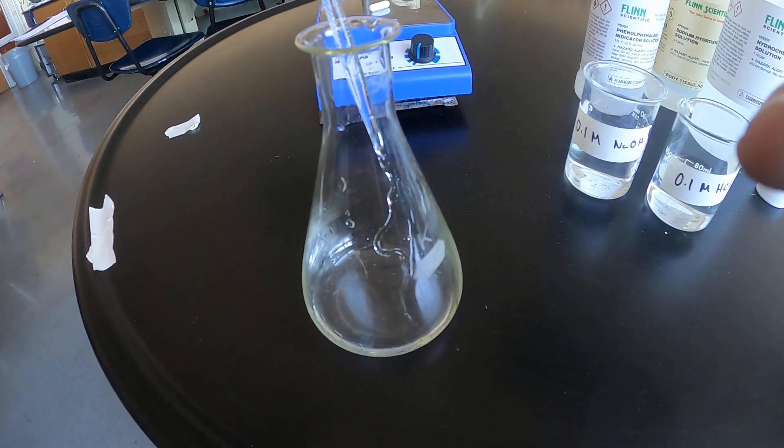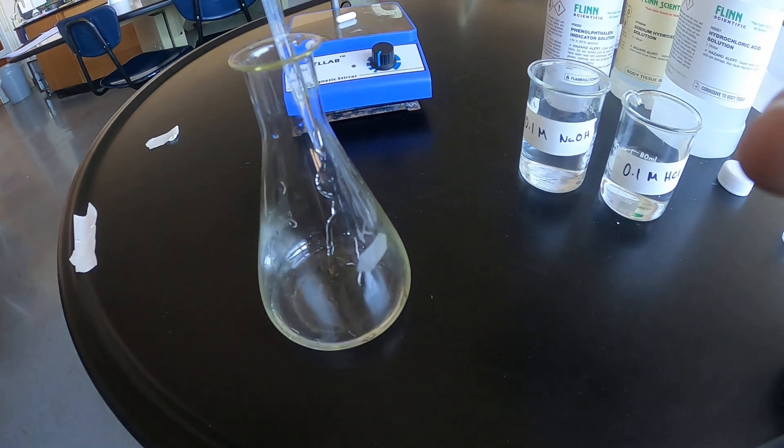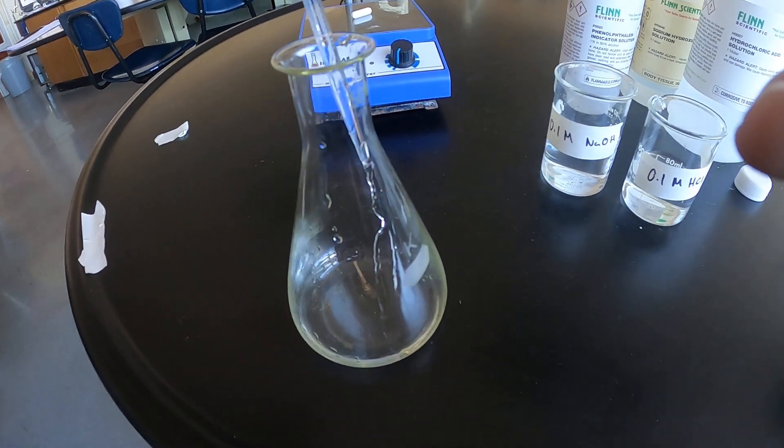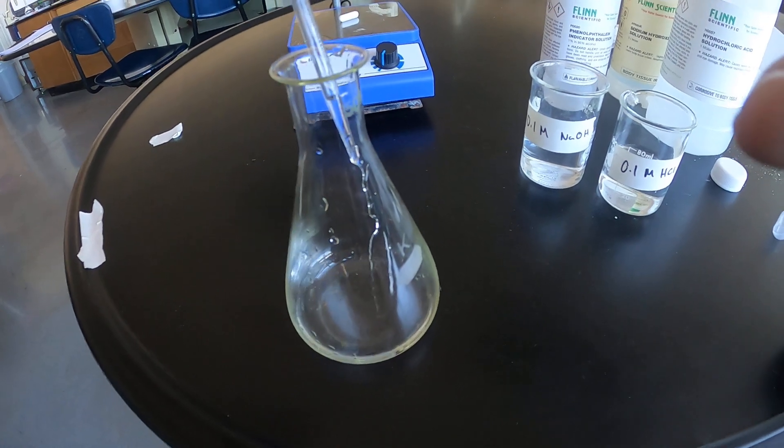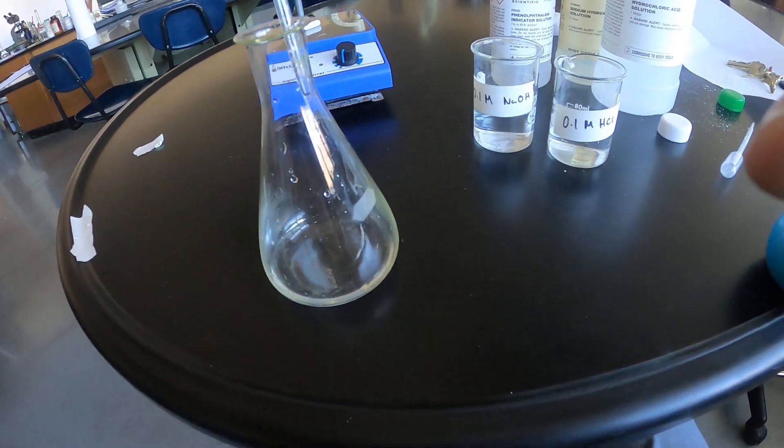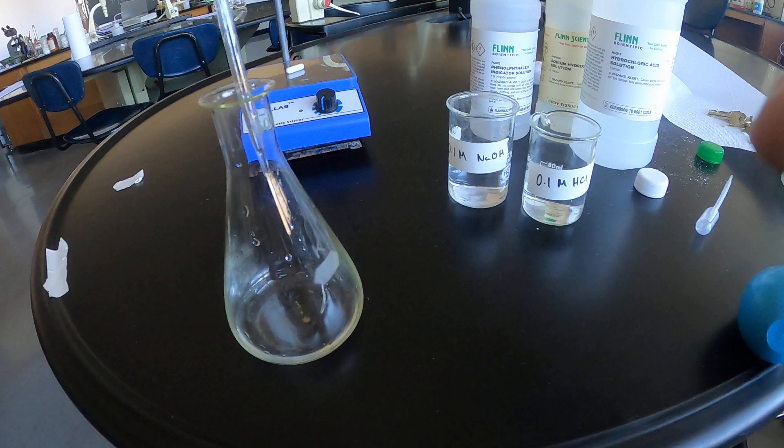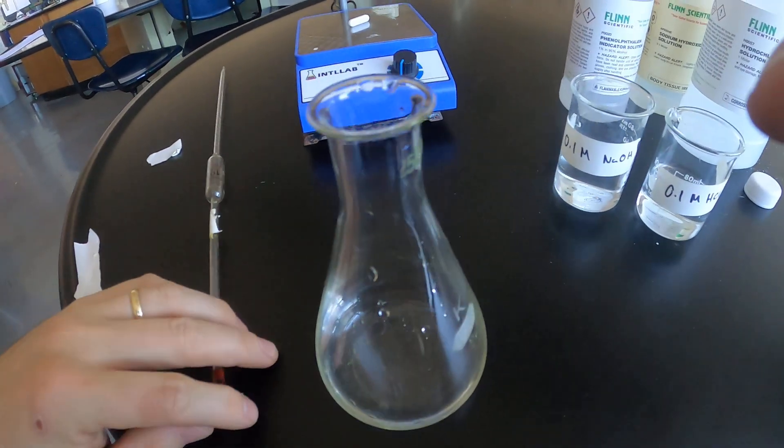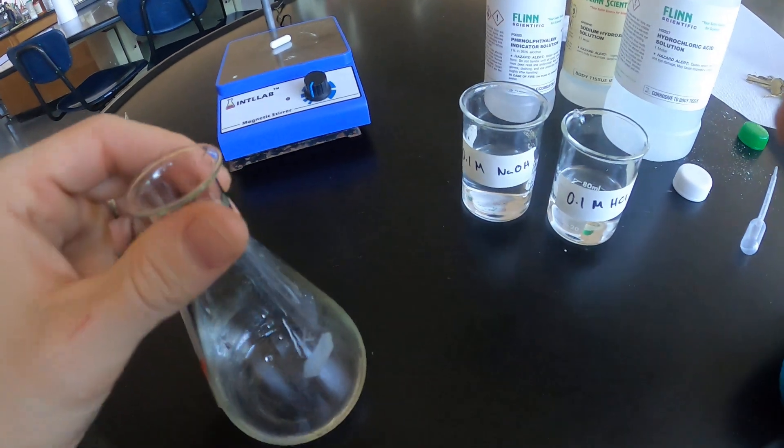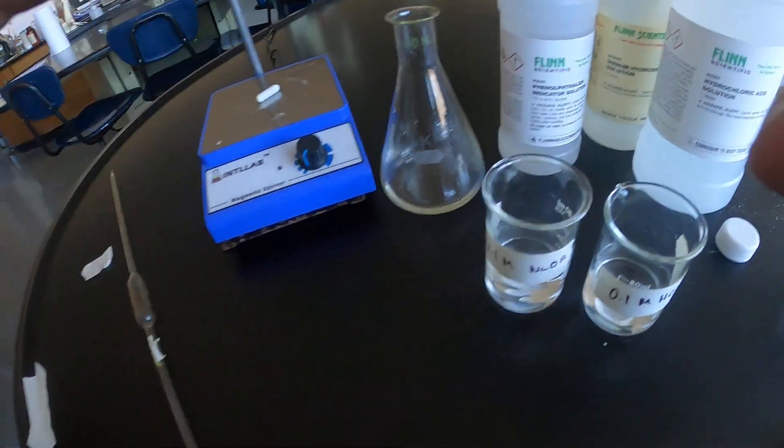In this lab you might share materials with the neighboring group. Could be the stir plate, could be the volumetric pipette, the bulb, so we're just going to share. If you're sharing, two people take a determination then you switch while the other group takes a determination if they are indeed running the experiment on that day.